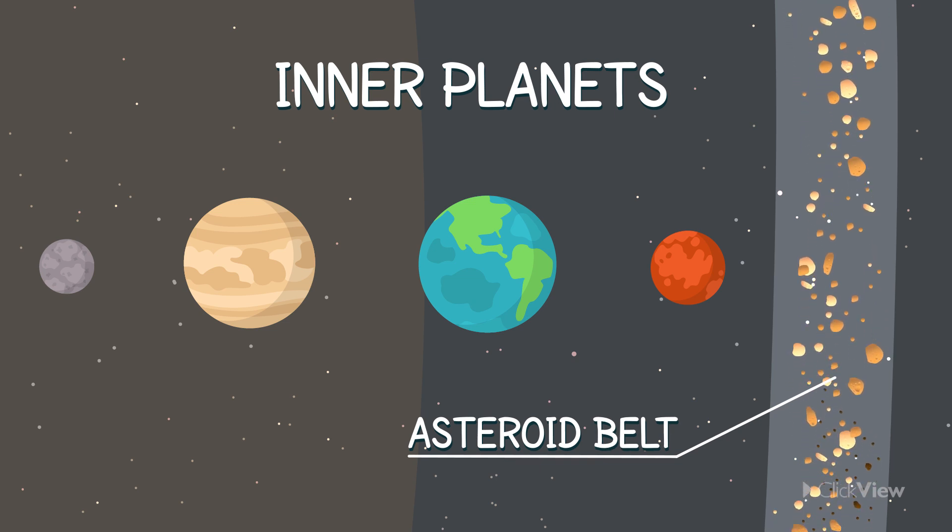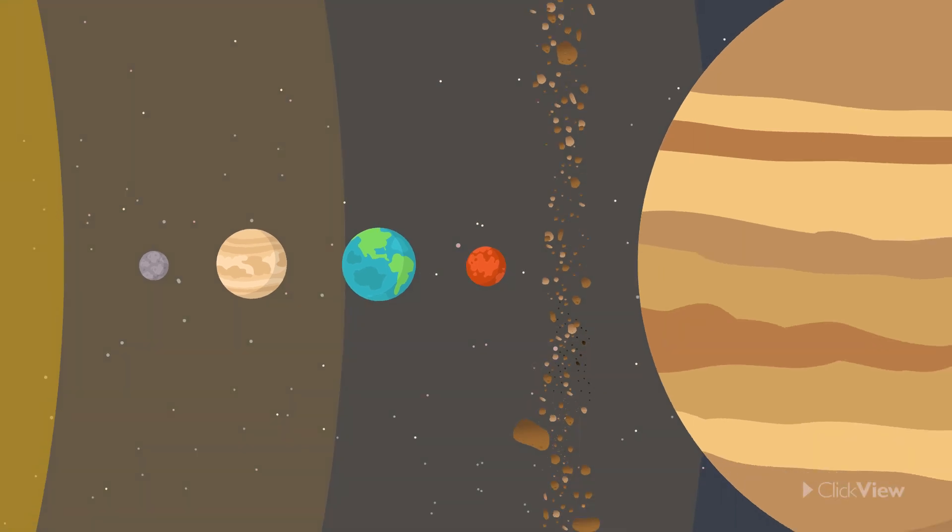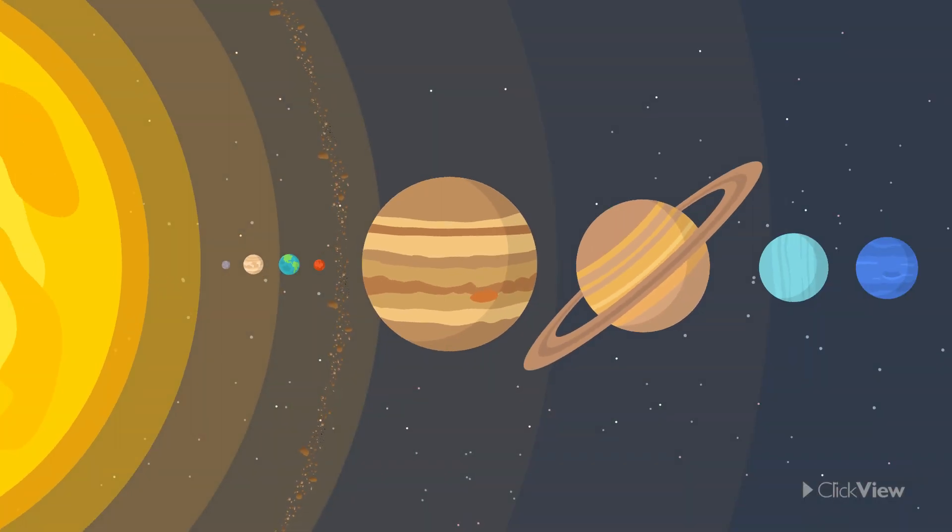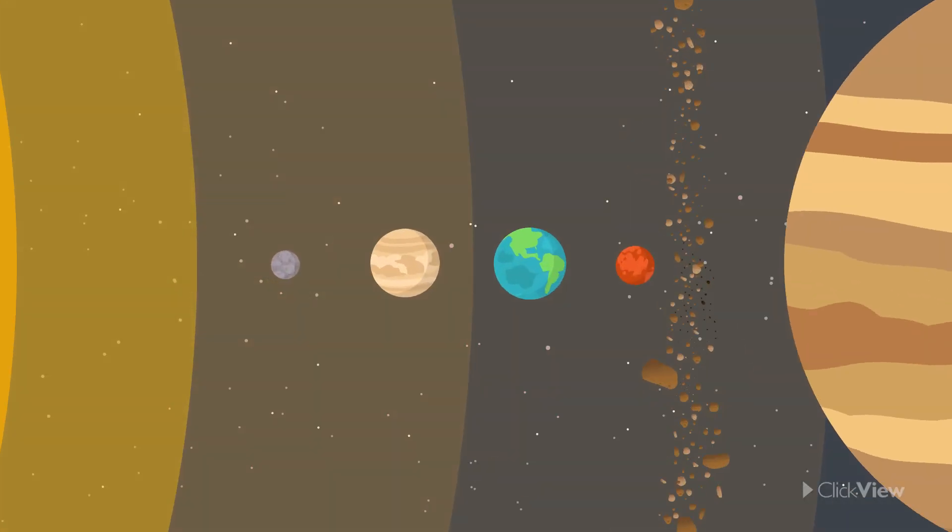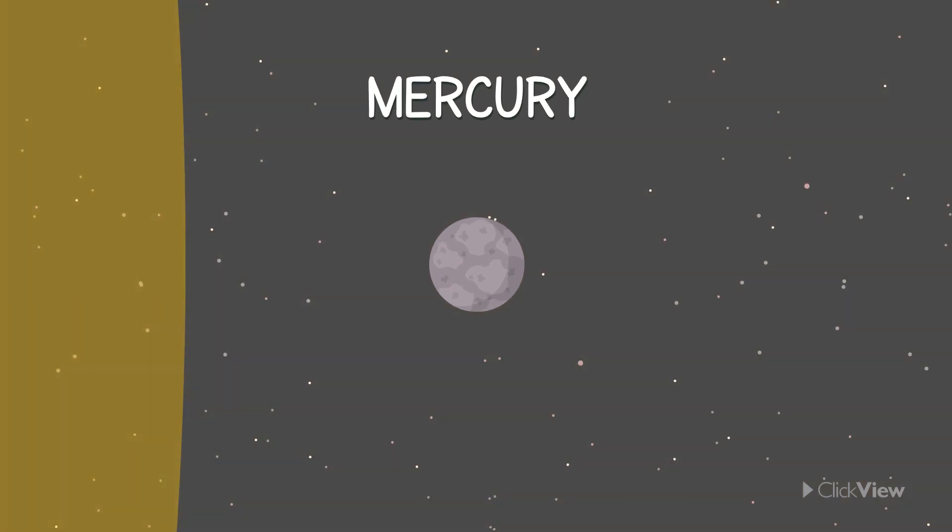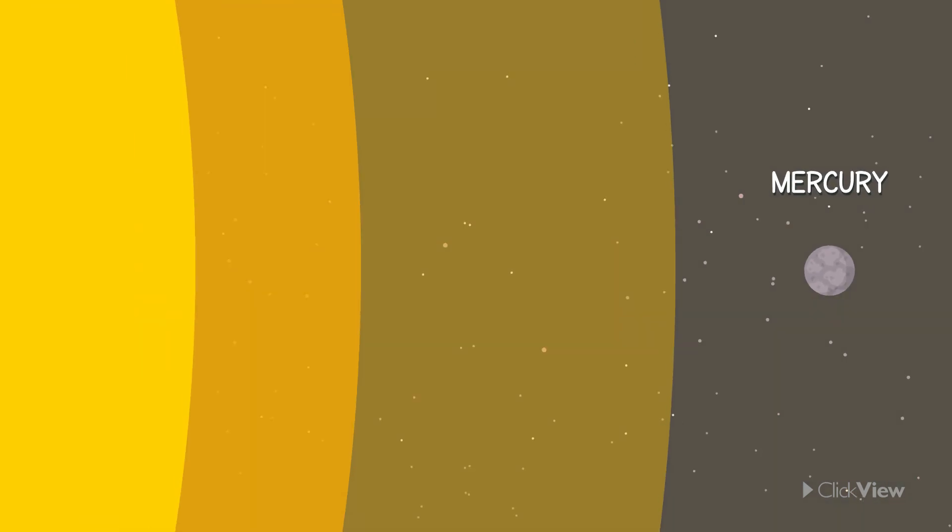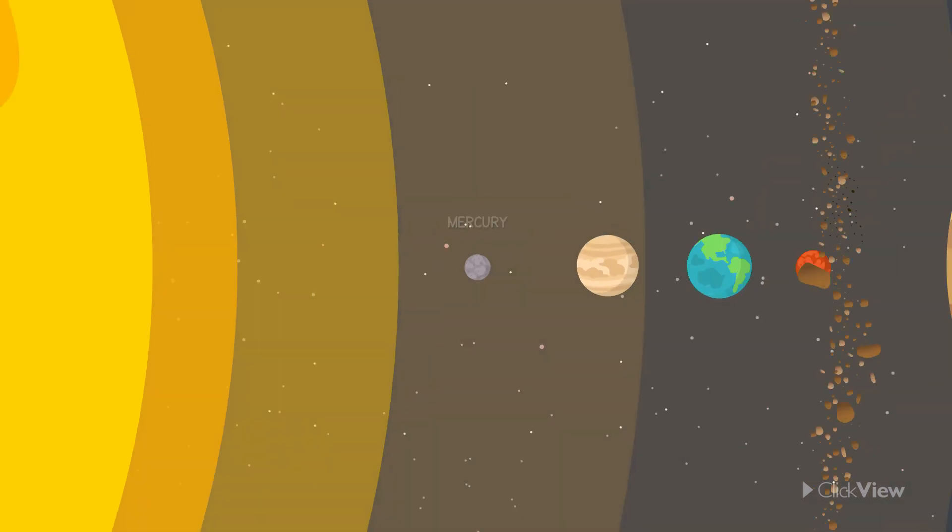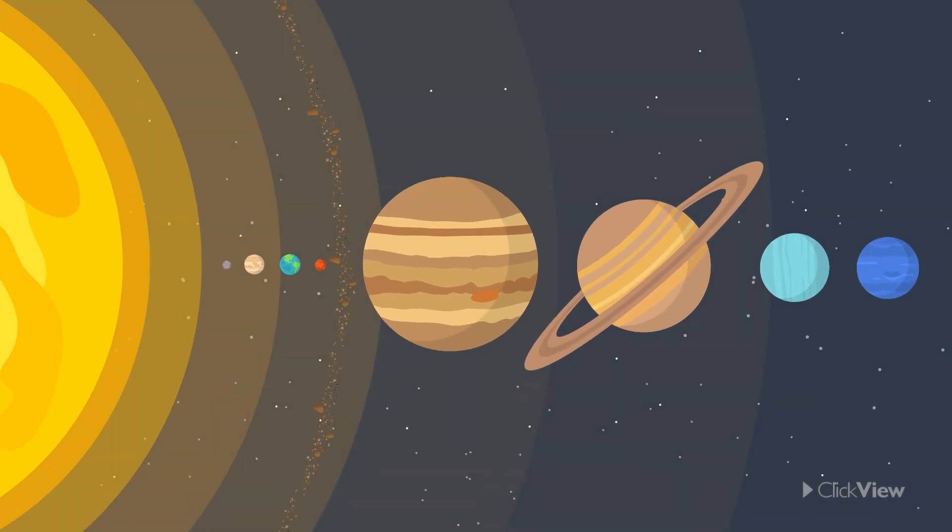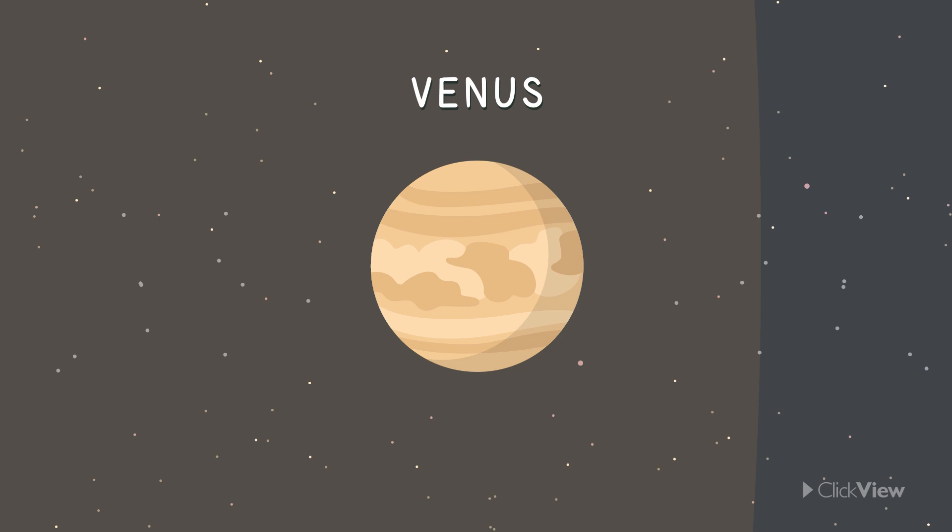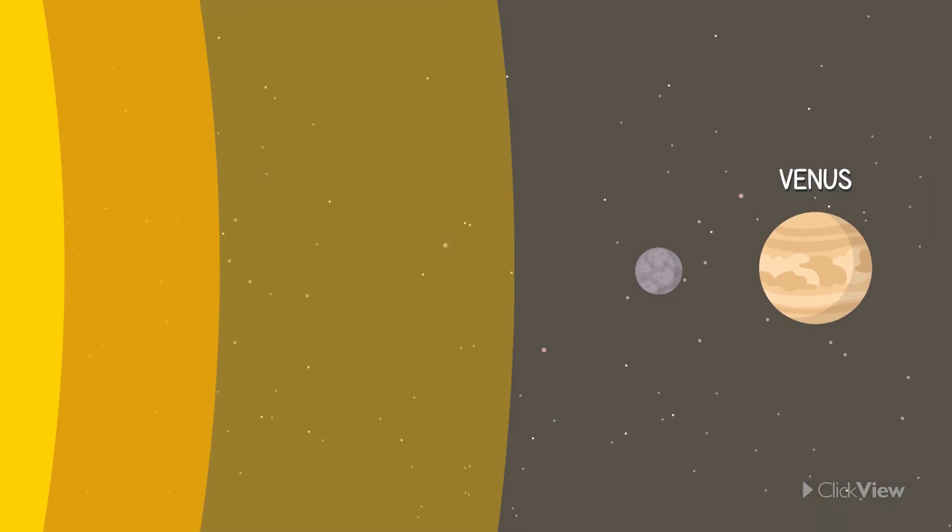The asteroid belt orbits the Sun along with all the planets. The first planet in our solar system is Mercury, the closest planet to the Sun. It is also the smallest planet. This is Venus. Venus is the second planet from the Sun. It is the hottest planet.